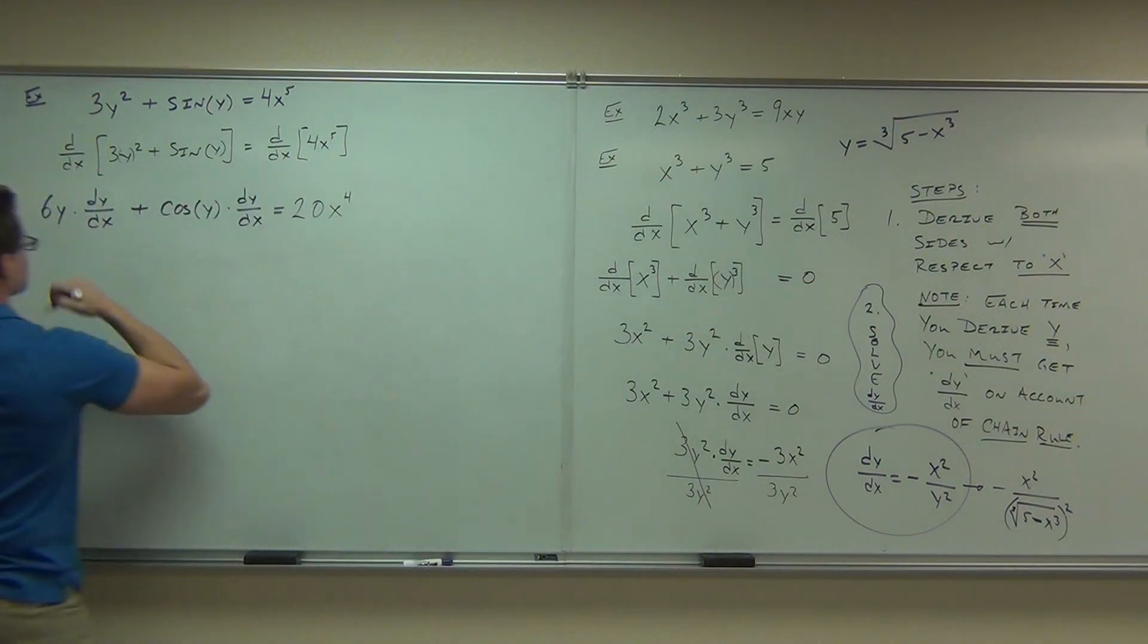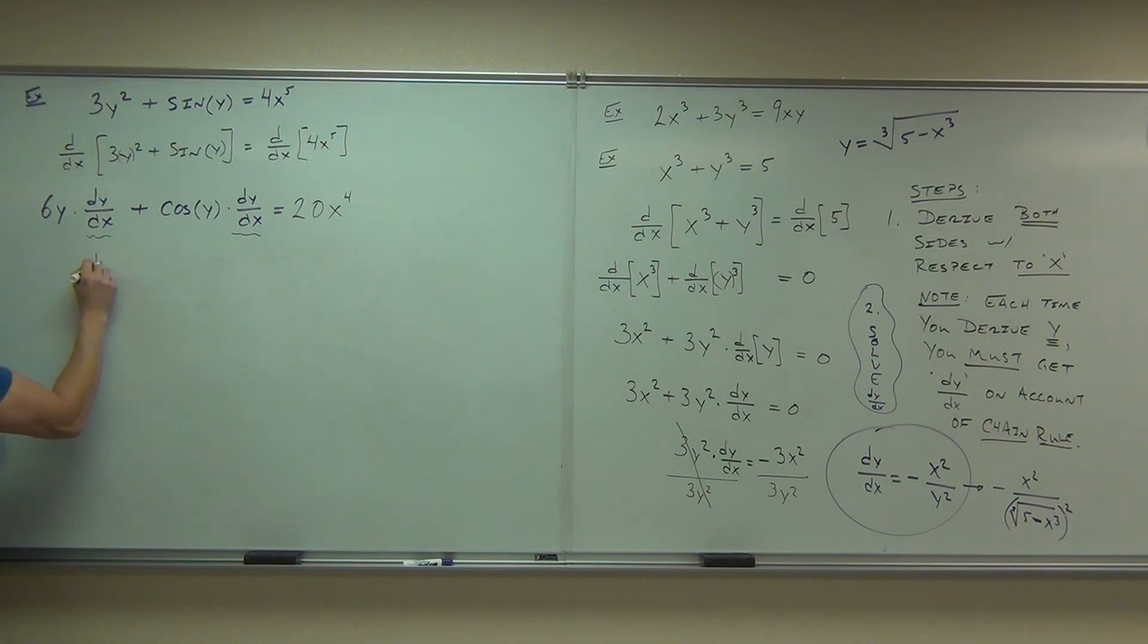So you see your dy dx here, your dy dx here. That means you're going to factor. So you're going to have to be good at factoring. If you factor that out, you get a 6y plus...